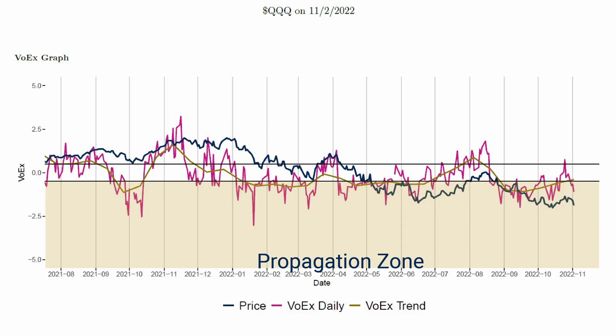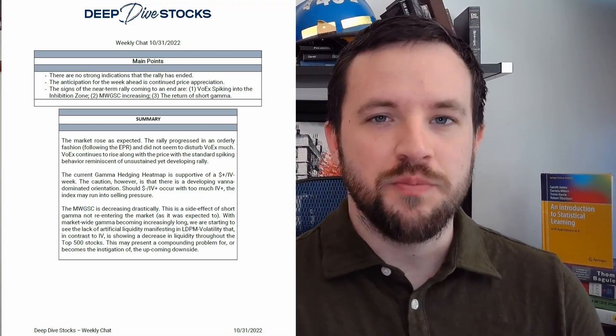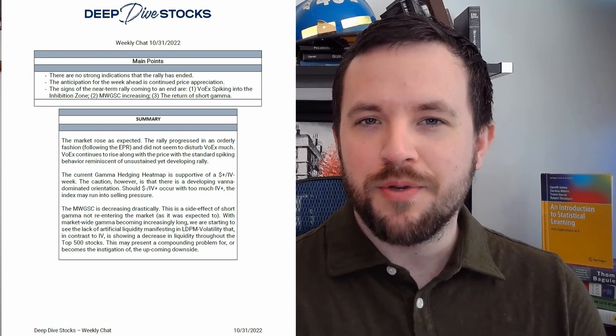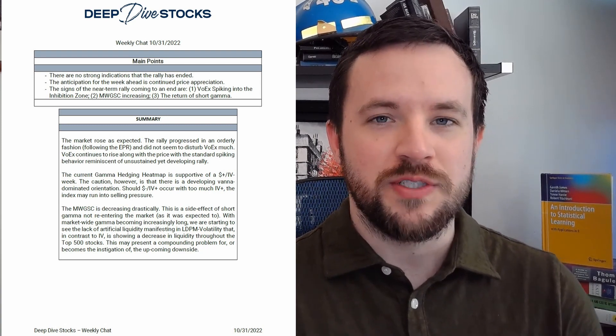This is even more noticeable in QQQ, where we noticed that Vorex had already spiked into the inhibition zone and has now fallen into the propagation zone, which is what we classify as an indicator that the rally has stopped. This is curious because in the weekly chat and the data above suggested that this week, especially, the rally should continue, but it seems that the meeting has maybe put a premature end to this most recent rally.